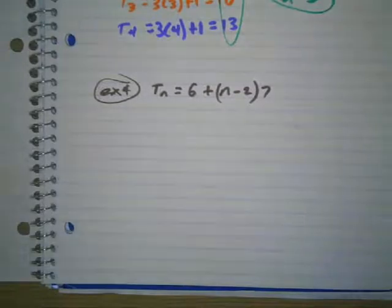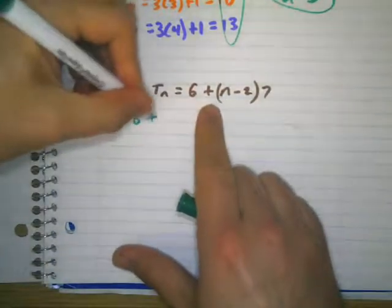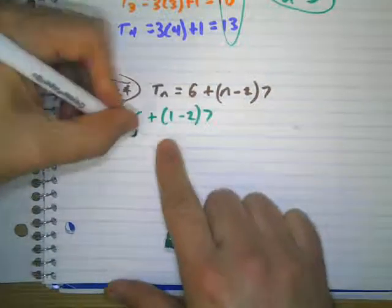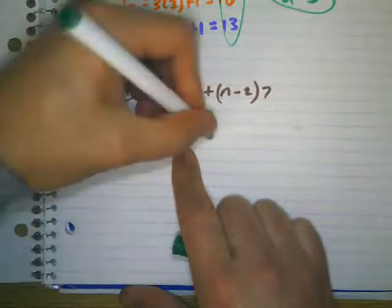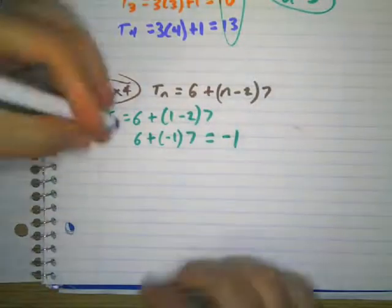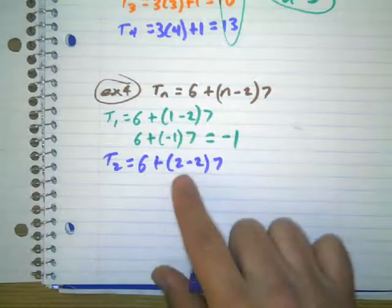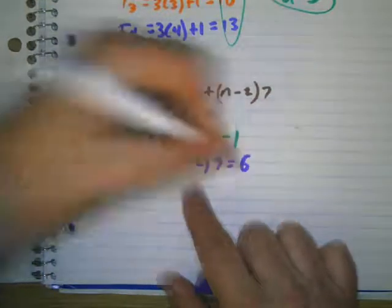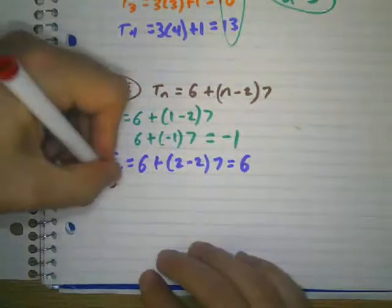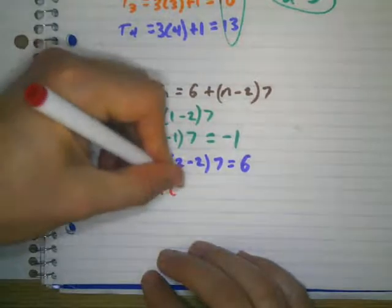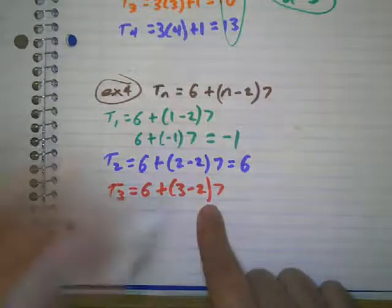It looks like a scary thing, but it's the same — we're going to plug numbers in for n. Plug in 1 for n: t sub 1 = 6 + (1 minus 2) times 7 = 6 + (negative 1) times 7 = 6 minus 7 = negative 1. Plug in 2: t sub 2 = 6 + (2 minus 2) times 7 = 6 + 0 = 6. Plug in 3: t sub 3 = 6 + (3 minus 2) times 7 = 6 + 7 = 13.